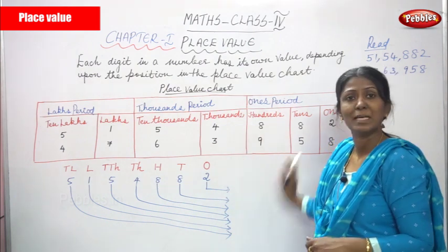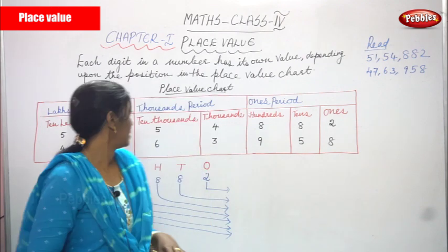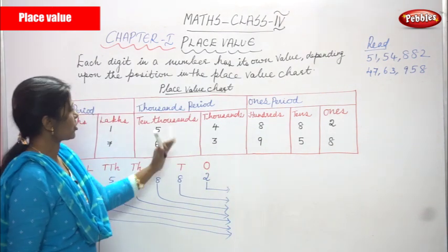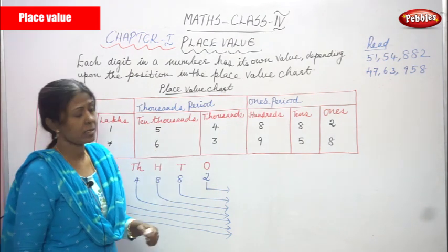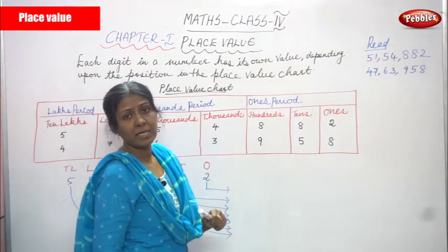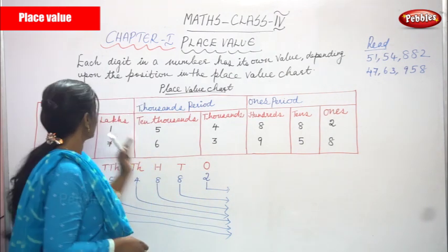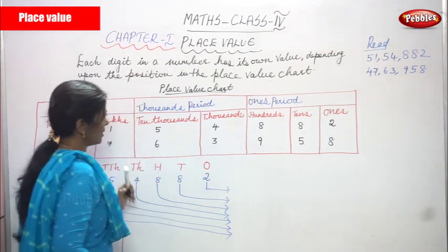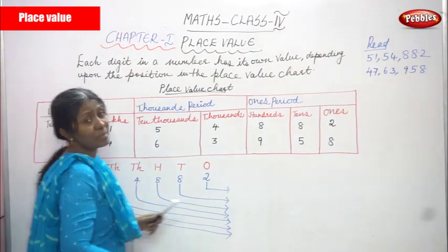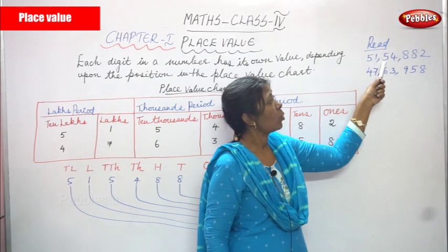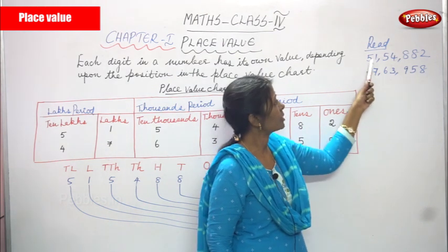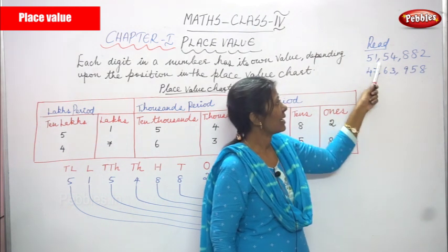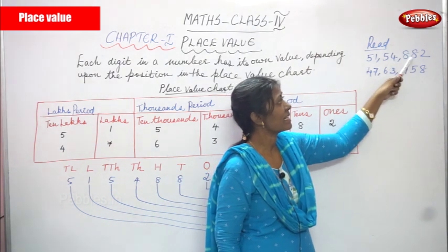Now we are going to look at the chart and I will explain the place value - what are the positions of the numbers? This is a place value chart. This is the lakhs period, this is the thousands period, and the other is the ones period. There are three periods: lakhs period, thousands period, and ones period. The number given is 51 lakhs 54,882.